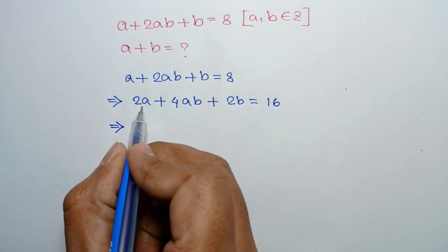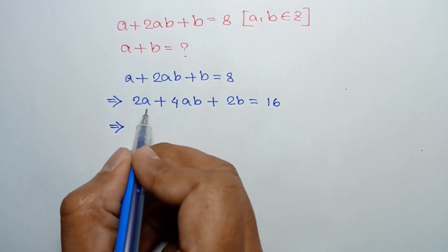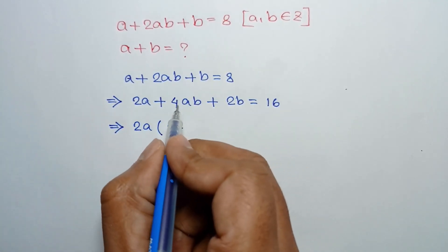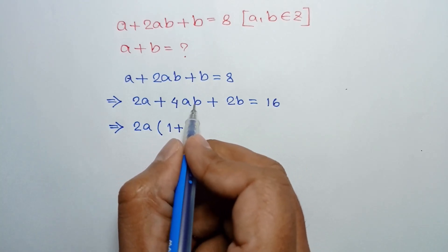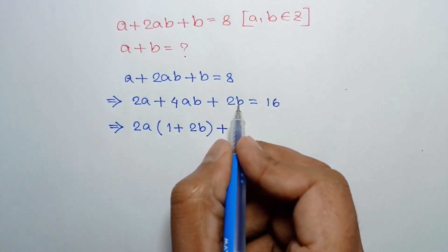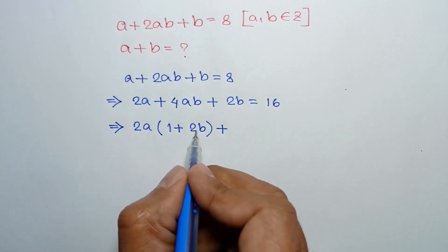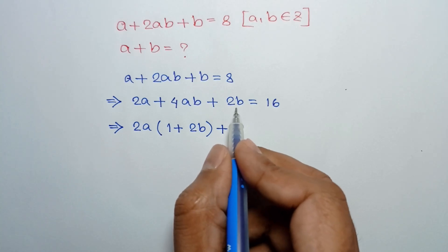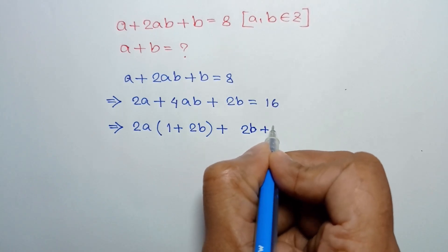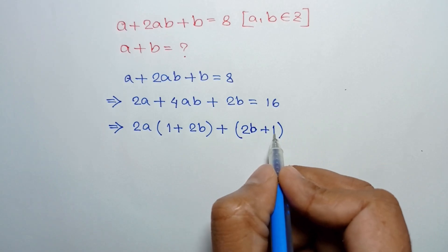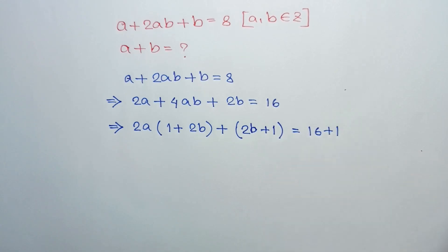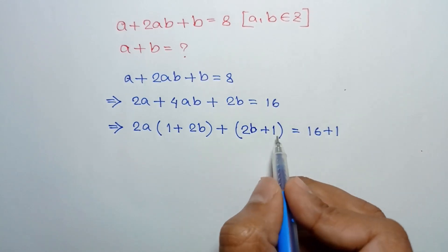Taking common 2a from the first two terms, we will have 2a times 1 plus 2b. There is only 2b remaining. To make 1 plus 2b, we have to add an extra 1, so we write 2b plus 1. To balance this 1, we have to add an extra 1 to the right side. This 1 and 1 will cancel out.